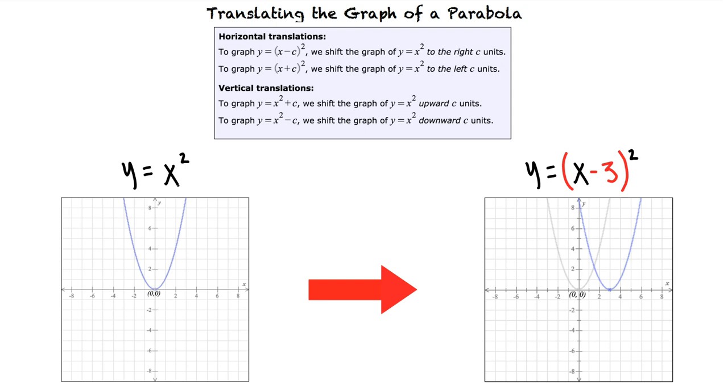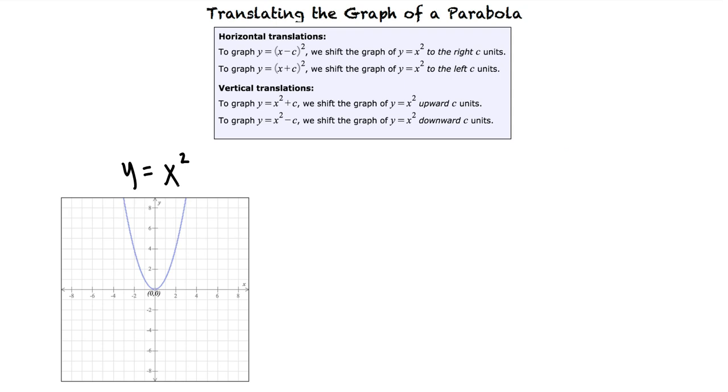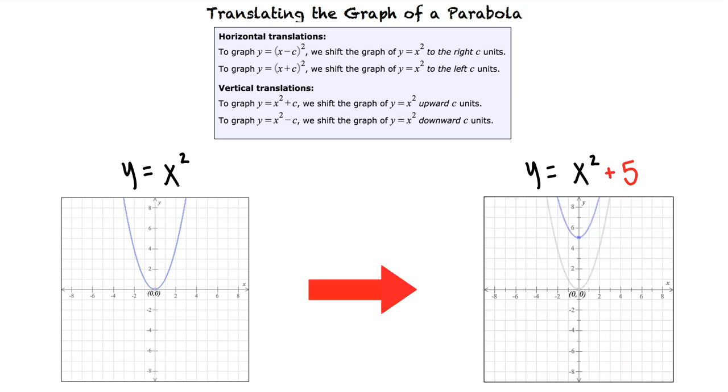Let's go back to the original function and try another example. Say we want to translate y equals x squared to result in the graph of y equals x squared plus 5. Since we've added 5 to the equation, we will shift the graph of y equals x squared upward 5 units. I think this makes sense.